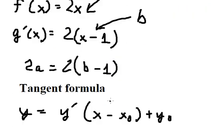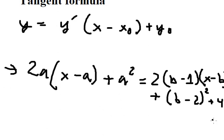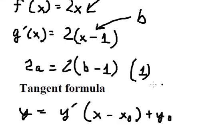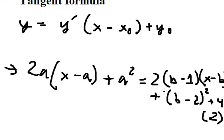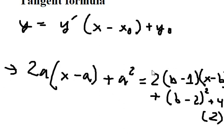Now we have equation number one and equation number two. We need to find the values of a and b. The first step: 2b minus 1 equals 2a, so we need to substitute this into the equations, replacing 2a with 2b minus 1.